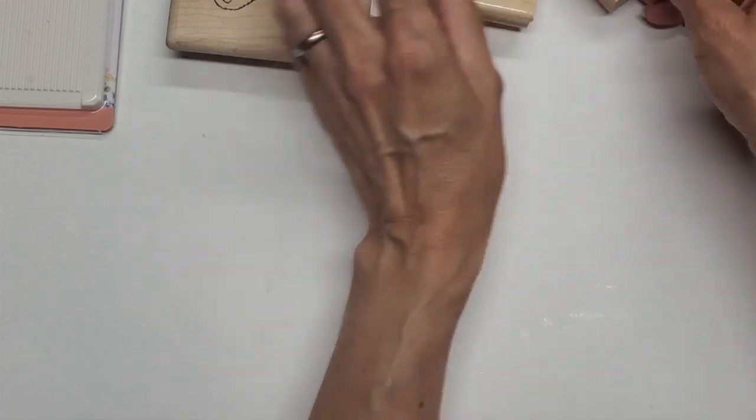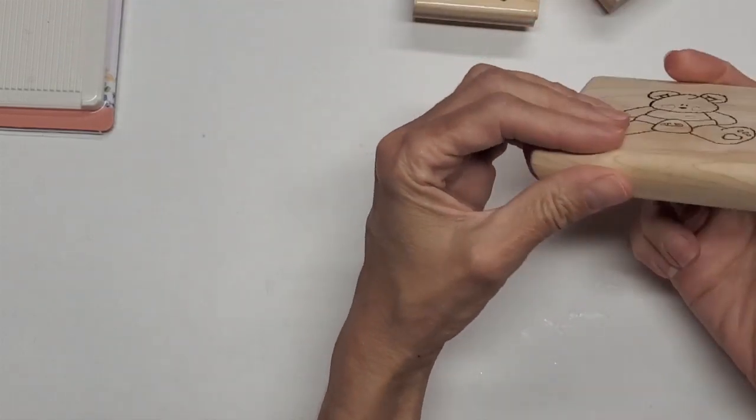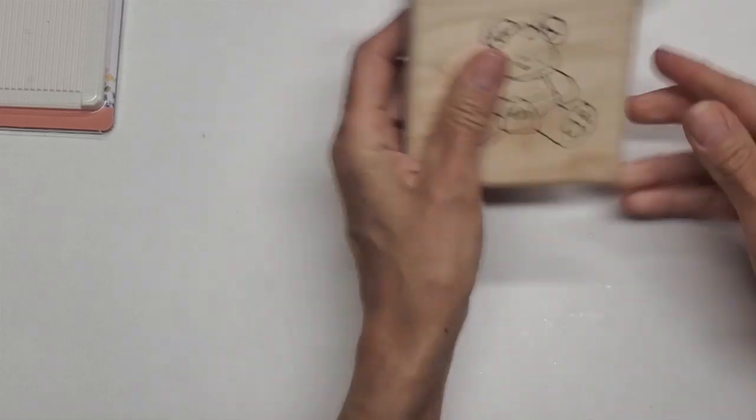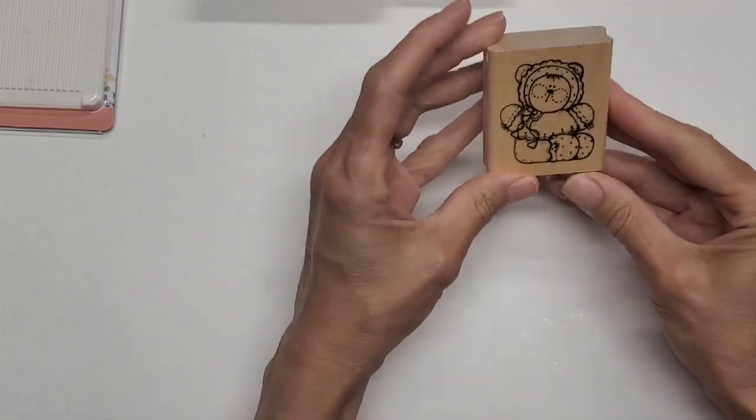This one is L127 Christmas Bear. This one I bought the rubber and mounted it on this wood. This is a beautiful block my husband made. Another Dot stamp H199 Baby Bear.